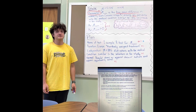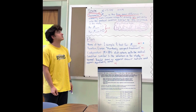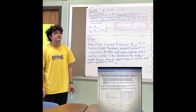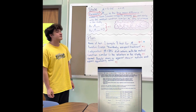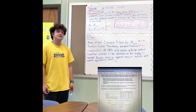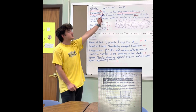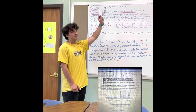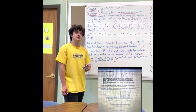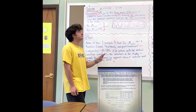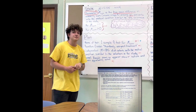The first thing we're going to want to do is extract some information from the problem. The significance level is 5%, so our alpha is 0.05. The number of volunteers in the sample is 19, so we're going to use 19 as n.